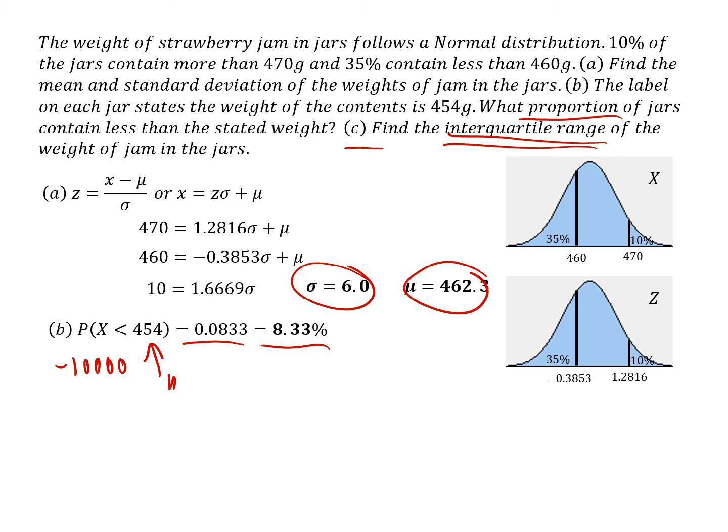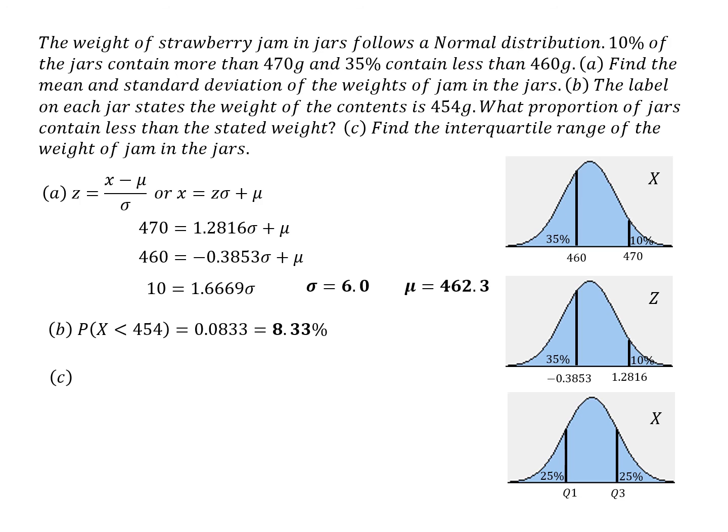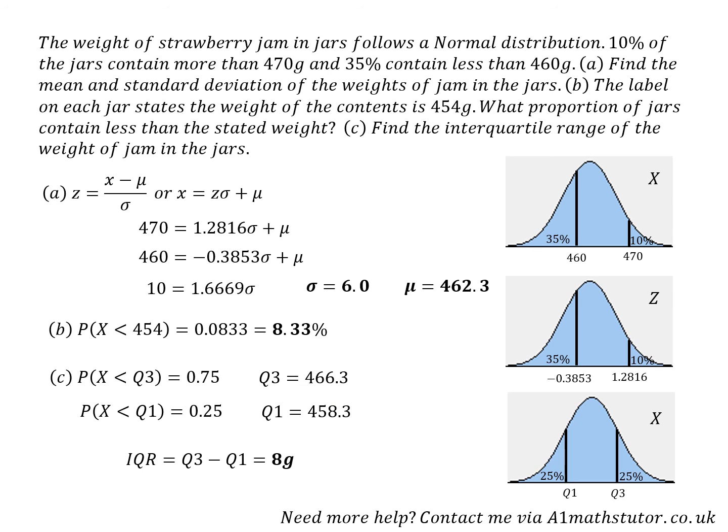Okay. So part C, the interquartile range of the weights of jam. So the interquartile range is the distance, the gap between the lower quartile and the upper quartile. So once again, I can use my calculator to find those two numbers. Using the inverse normal distribution again, for the upper quartile, I'm using a left tail of 0.75. And for the lower quartile, a left tail of 0.25. And so the interquartile range is the difference between these two numbers, which is around about eight grams. Okay, so there we are.